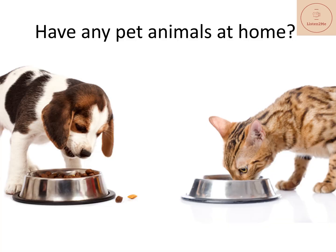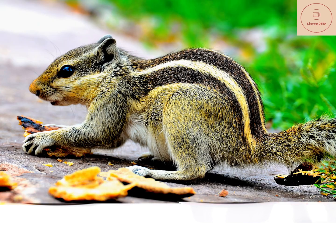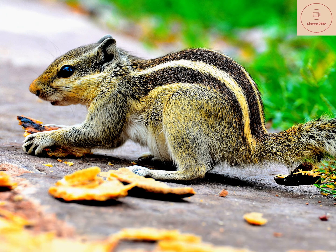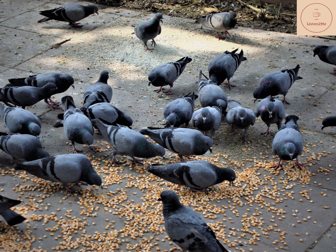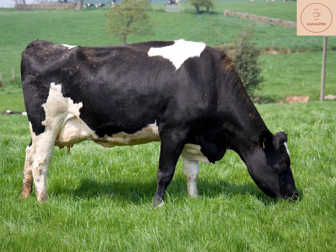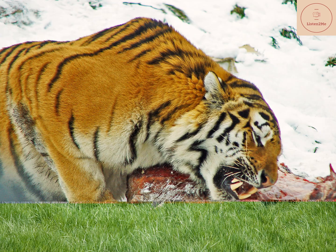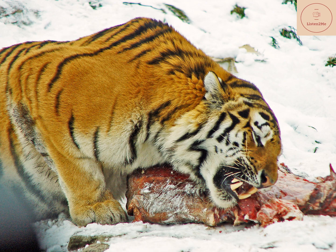Do you have any pet animals or cattle at your home? If yes, you might be aware of the food that animal eats. Have you ever thought about what food a squirrel or a pigeon has? Think and try to find out. Some animals eat only plants and grass, whereas some animals eat meat. Based on this, animals are classified into three types.